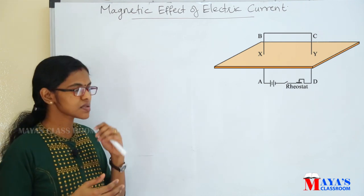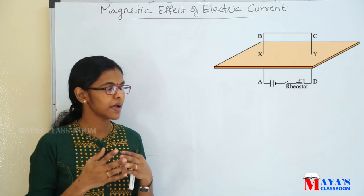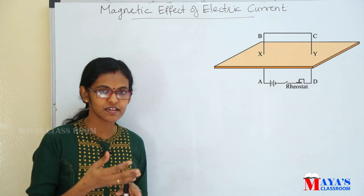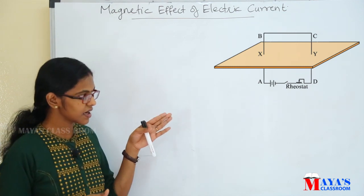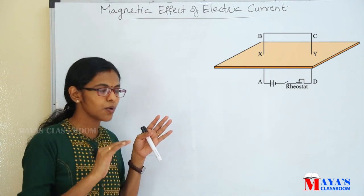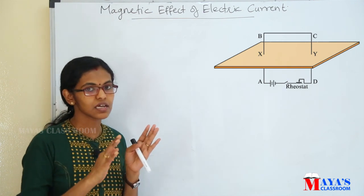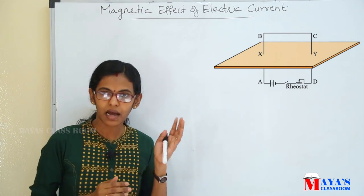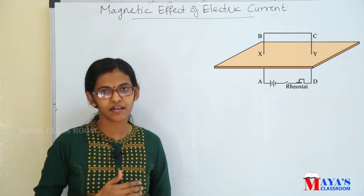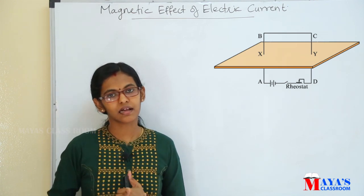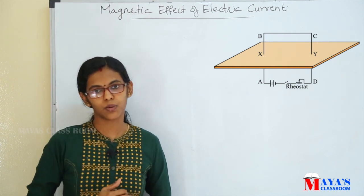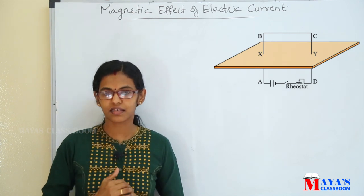Now we are going to observe the deflection of the compass needle. We observe the anti-clockwise direction. We are going to learn how the compass needle deflects. If we look at the magnetic field, we see the magnetic field around the compass needle. This is a rule called James Clark Maxwell's right-hand thumb rule.